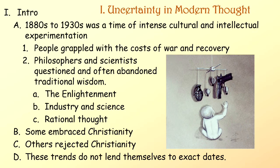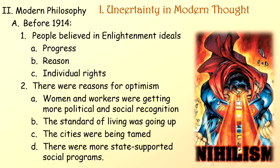The 1880s to the 1930s was a time of intense cultural and intellectual experimentation. People grappled with the costs of war and recovery. Philosophers and scientists questioned and often abandoned traditional wisdom — the Enlightenment, industry and science, rational thought. Some embraced Christianity, others rejected it. Before 1914, people believed in Enlightenment ideals: progress, reason, individual rights. There were reasons for optimism — women and workers were getting more political and social recognition, the standard of living was going up, cities were being tamed, and there were more state-supported social programs.